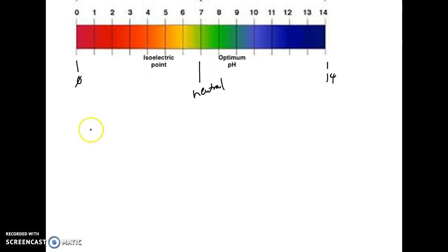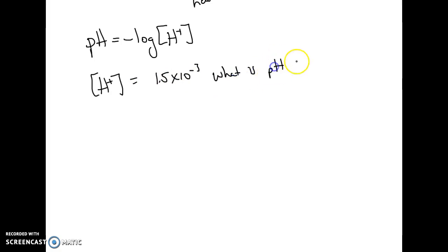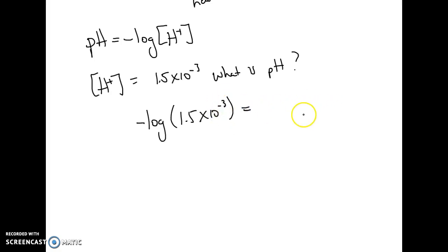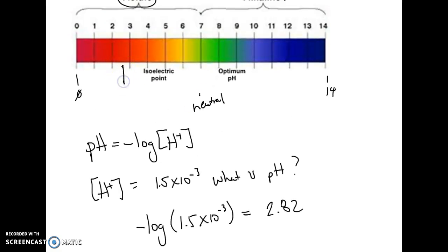To calculate pH, we use the formula provided on your equation sheet: pH = −log[H⁺], the negative log of the hydrogen ion concentration. For example, if [H⁺] = 1.5 × 10⁻³, we calculate pH = −log(1.5 × 10⁻³). Running that through the calculator gives 2.82 — a relatively acidic pH.